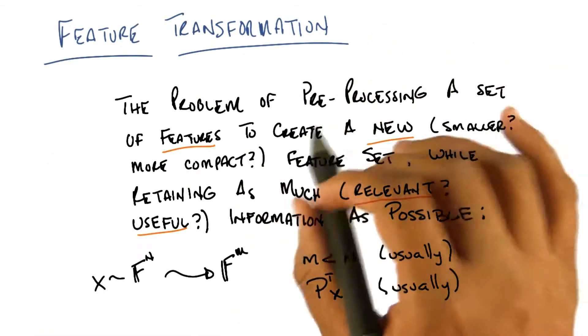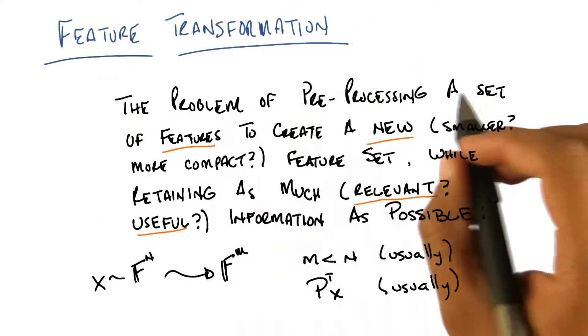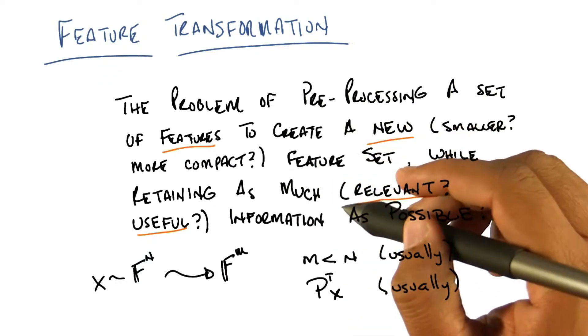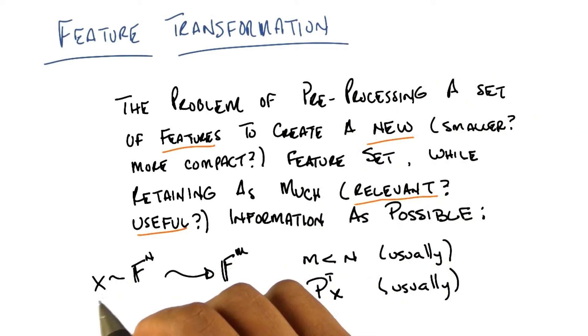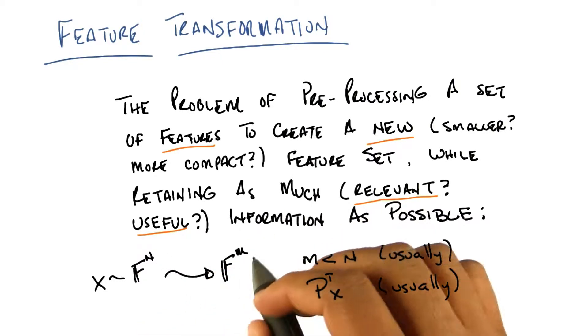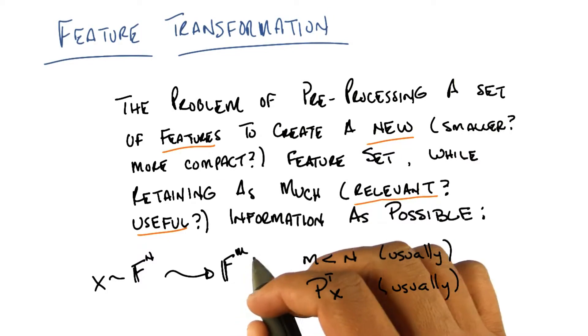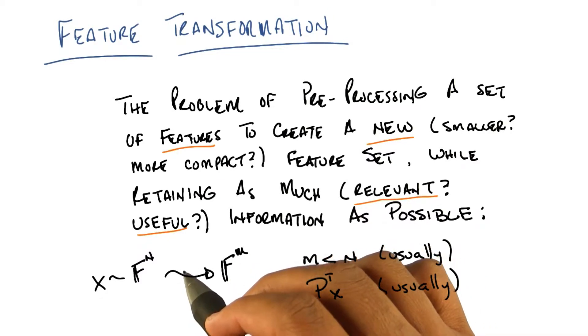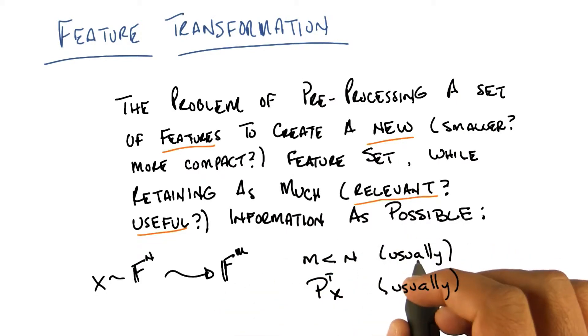But what we're going to do is we're going to restrict our notion of feature transformation to what's called linear feature transformation. So let me define that for you explicitly. So as before with the feature subset, we said that we were taking a bunch of features or a bunch of instances that were in some n-dimensional feature space and transforming it into another feature space of size m. And in the feature selection problem, m was meant to be less than n, hopefully much less than n.